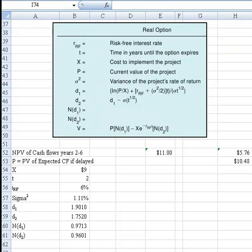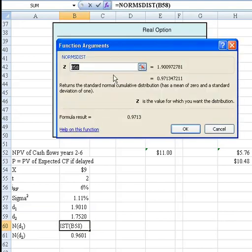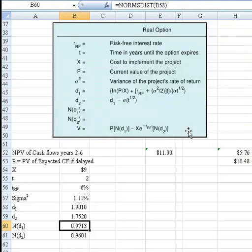Next we need to determine the normal cumulative distribution for d₁ and d₂, and I did this using Excel. The function is called NORMSDIST. It returns the standard normal cumulative distribution from the value you provide. We need to find the value for B58, the d₁ value we already calculated. It comes out to be 0.9713. Then we can simply copy that down, and we get the normal cumulative distribution for d₂ as 0.9602.